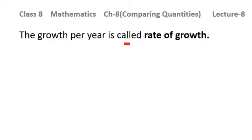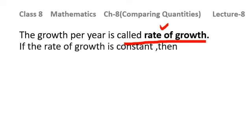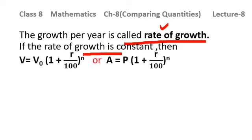The growth per year is called rate of growth. By what rate a particular thing is increasing — that is the rate of growth. If this rate of growth is constant, then V = V₀ × (1 + R/100)^N.